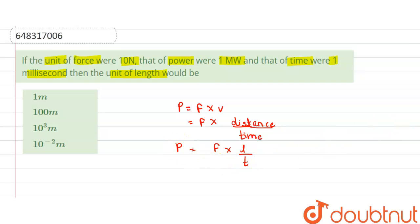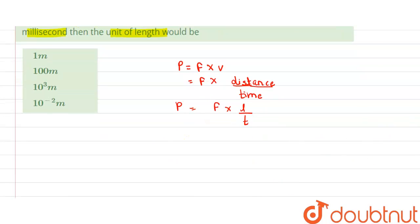So we know the unit of power is given as 1 megawatt, that means 10⁶ watts. Therefore, L equals 10⁶ times 10⁻³ upon 10.